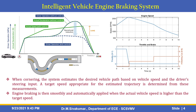When cornering, the system estimates the desired vehicle path based on vehicle speed and the driver's steering input. A target speed appropriate for the estimated trajectory is determined from these measurements. Engine braking is then smoothly and automatically applied when the actual vehicle speed is higher than the target speed.